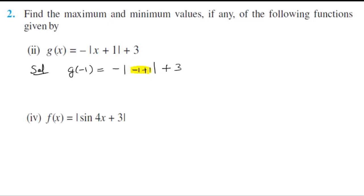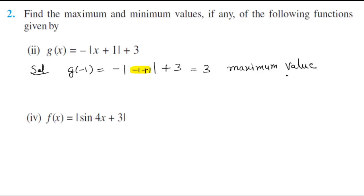In the modulus of this — this is the modulus — which will be the maximum value. You can see that in this function property we have found the maximum value. Differentiation is not necessary. If the competition requires it, you can do it, but for CPSC you can write the maximum value directly. This is not necessary.